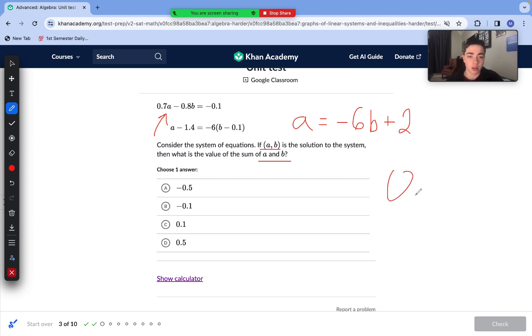Let's substitute that into our first equation. So now we have 0.7 times (-6b + 2) minus 0.8b = -0.1. Before I can write that, let's just distribute out our 0.7. 0.7 times -6 is -4.2b plus 1.4 minus 0.8b. -4.2b minus 0.8b is -5b. So now we have -5b + 1.4 = -0.1.